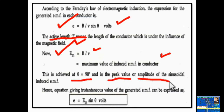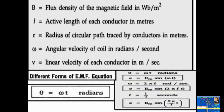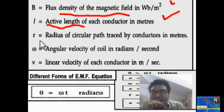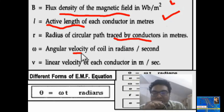This maximum value BLv is called the peak value or amplitude of the sinusoidal induced EMF. The instantaneous equation of the generated EMF is written as: e = Em sinθ volts. Here B is flux density in Weber per meter square, L is the active length of each conductor in meters, and r is the radius of the circular path traced by the conductors in meters.